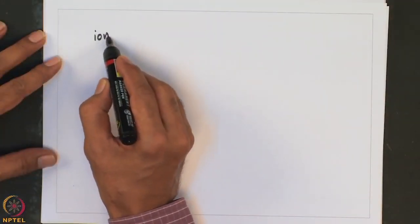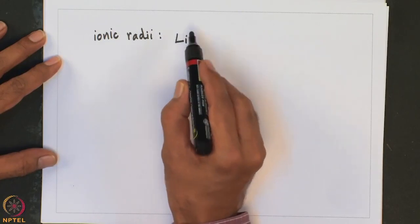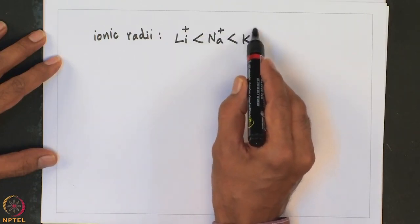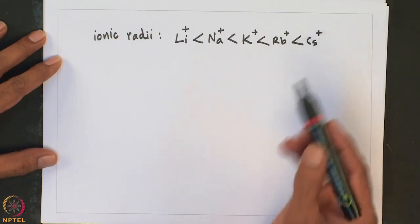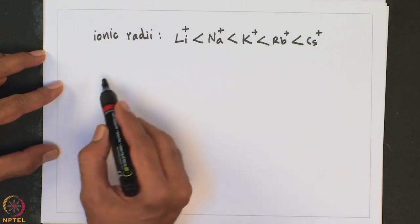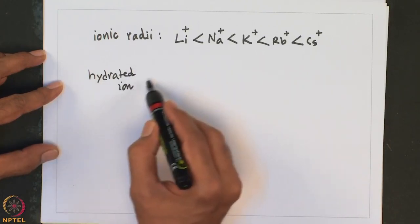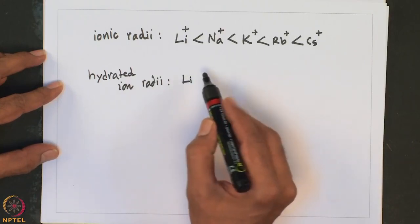Let me begin with a question. Let us look into the ionic radii of group 1 elements. It follows this order. Let us look into the hydrated ion radii. This follows a different trend, exactly opposite trend.